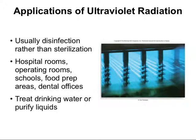Ultraviolet radiation is usually used in disinfection rather than sterilization, and it's used for things like hospital rooms, operating rooms, schools, food prep areas, and dental offices. It can also be used to treat drinking water or purify liquids — they'll spread a thin liquid film under radiation lamps. This can be used for things like juices, milk, vaccines, or plasma.